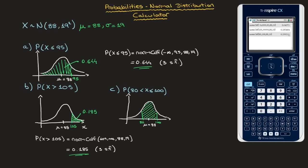Rounding to three significant figures, this green area is equal to 0.399. Just as for the previous examples, in an exam we should write: the probability that X be between 80 and 100 equals normCDF with lower bound 80, upper bound 100, mean 88, and standard deviation 19 — equal to 0.399. And that's how to calculate probabilities when working with the normal distribution by calculating areas under the bell curve. That's it for this tutorial.